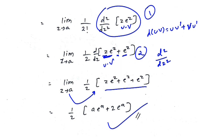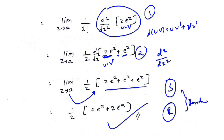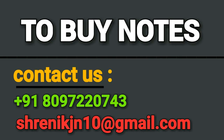Putting z equals a, the final answer is one-half times (a times e raised to a plus 2 times e raised to a). This covers all the concepts of simple pole and repeated pole in the residue theorem. In the next video, I will show techniques on how to solve these questions very fast.